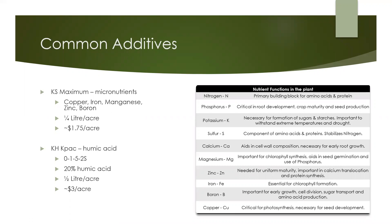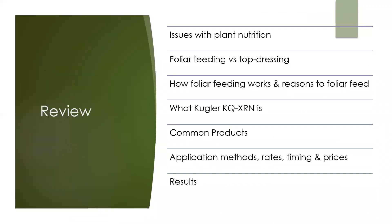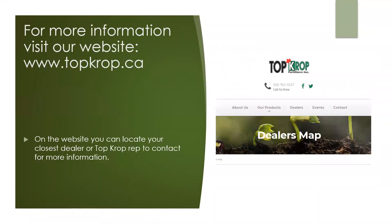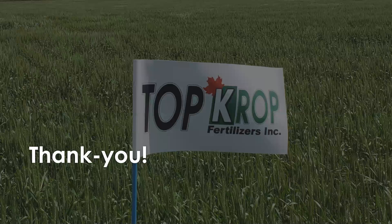Listed here are some of the main functions of different nutrients in the plant. This concludes our presentation. To quickly review: we mentioned some issues with plant nutrition, talked about foliar feeding versus top dressing, went over what the Kugler KQXRN is, and looked at some commonly used products, how to apply them, the pricing and some of the results. For more information, you can visit our website topcrop.ca — that's crop with a K — and there you can find your local dealer or Top Crop rep to answer any questions. If you want a more in-depth presentation, we have a webinar recording on our YouTube channel, along with videos on our other products. Thank you for watching our quick facts on foliar feeding.